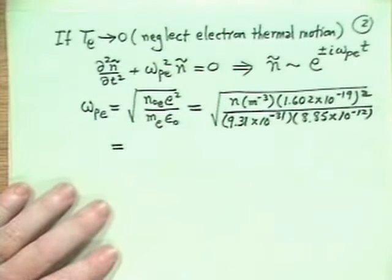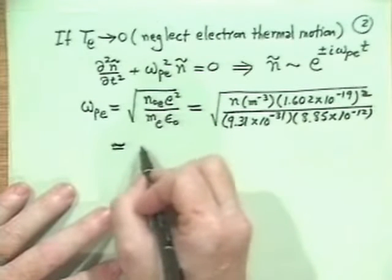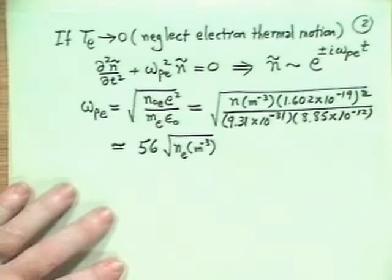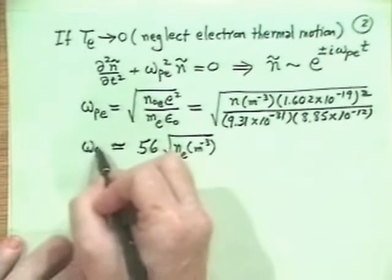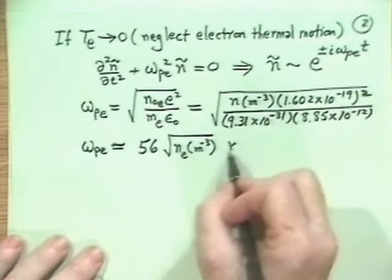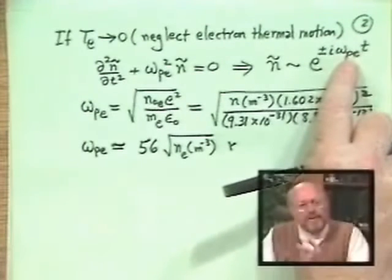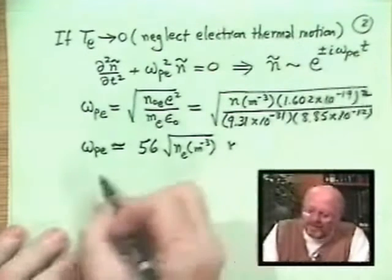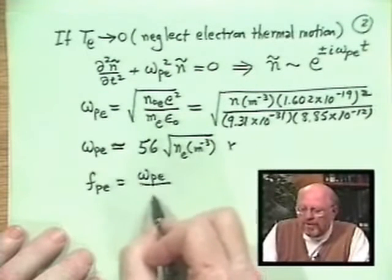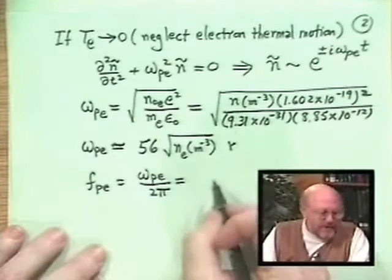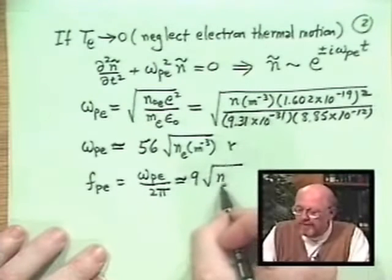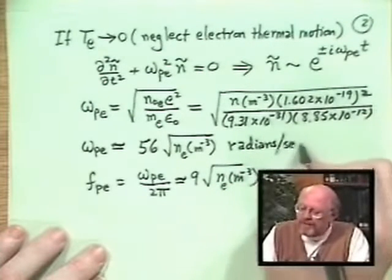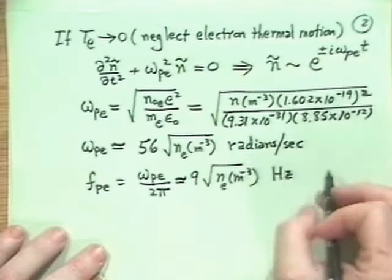Working out the constants, ω_pe ≈ 56√(n_e [m⁻³]) radians per second. Note that ω is the radian frequency. The actual frequency in cycles per second is f_pe = ω_pe / 2π, which turns out to be about 9√(n_e [m⁻³]) Hz. The first is radians per second; the second is hertz or cycles per second.